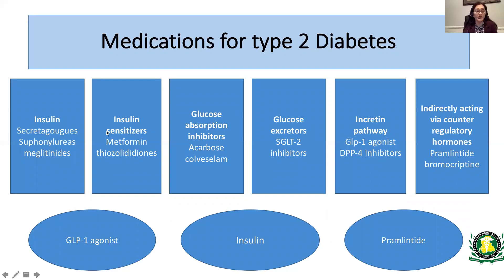The insulin secretagogues include the sulfonylureas and meglitinides. The insulin sensitizers — which work by decreasing insulin resistance — include metformin and thiazolidinediones. Then there are glucose absorption inhibitors, mainly acarbose; glucose excretors, which are the SGLT2 inhibitors that excrete excess glucose in urine; the incretin pathway agents, including GLP-1 agonists and DPP-4 inhibitors; and medications working indirectly via counter-regulatory hormones, such as bromocriptine. After oral medications come injectable medications — GLP-1 agonists and pramlintide — and finally insulin.